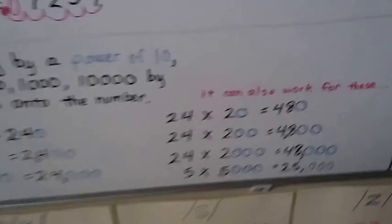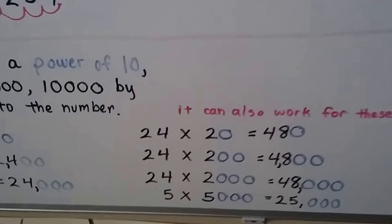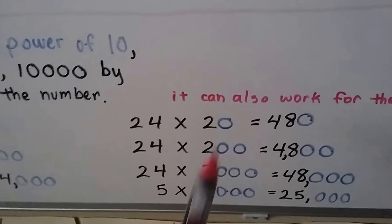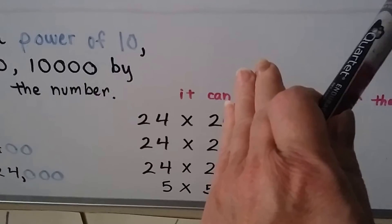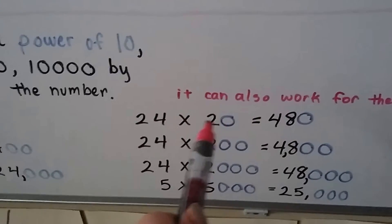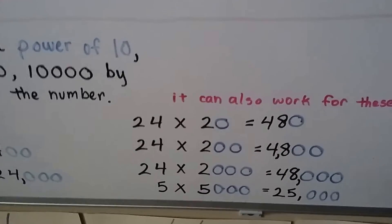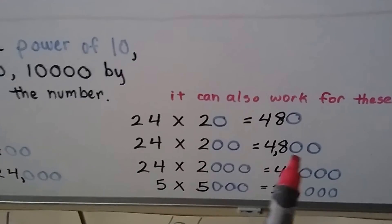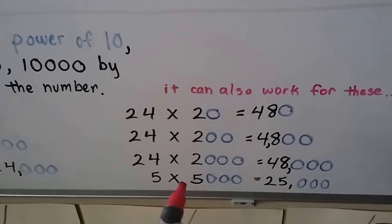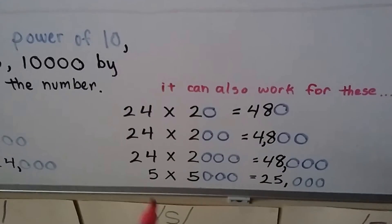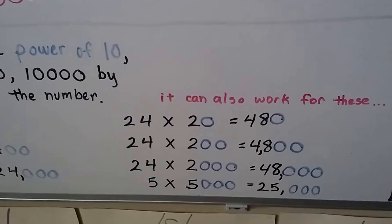We can also do it for other numbers — it doesn't have to just be a 10. It also works for other numbers as long as the trailing digits are all zeros. So if we have 24 times 2, that's 48, so 24 times 20 — there's one zero — we add a zero to get 480. 24 times 200, we add two zeros to get 4,800. 24 times 2,000, we add three zeros to get 48,000. We can even do 5 times 5,000 — five times five is 25, so it's 25,000. That can help you go quicker.